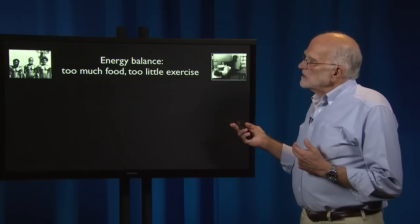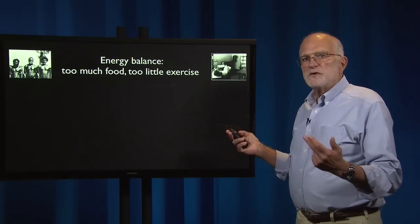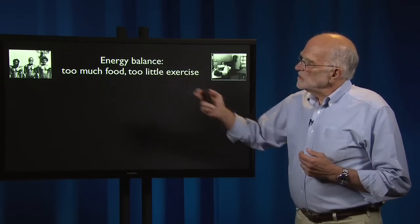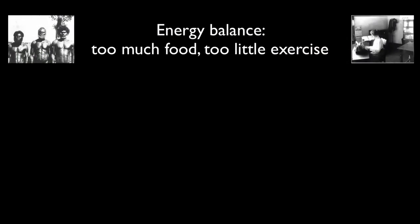Energy balance is basically the product of too much food and too little exercise. The image on the left is a group of people who were hunter-gatherers in the late 19th century. On the right, there is an office worker in the late 19th to early 20th century. That is a shift from an active foraging lifestyle to a sedentary lifestyle.